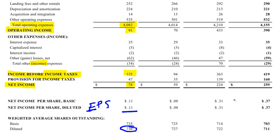Each successive quarter this calculation is done and you can compare across the columns — the different quarters, different income levels, and different earnings per share figures, all laid out for comparison.